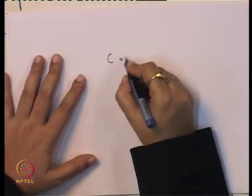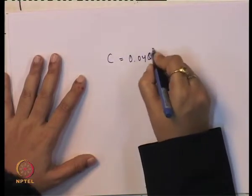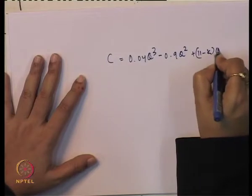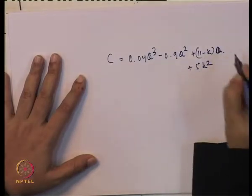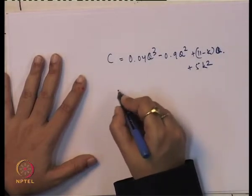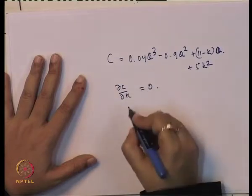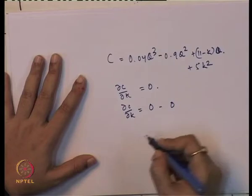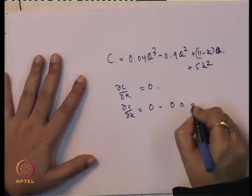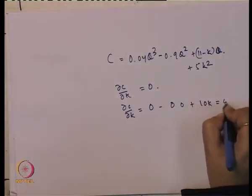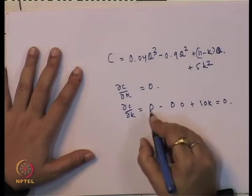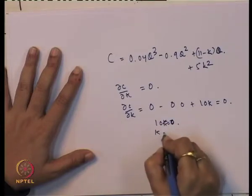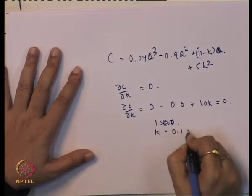Taking the cost function: C = 0.04Q³ − 0.9Q² + (11 − K)Q + 5K². Applying the first order condition dC/dK = 0, the first three terms go to zero and the fourth term gives −Q + 10K = 0, so 10K = Q, which means K = 0.1Q.